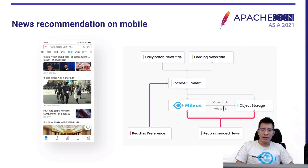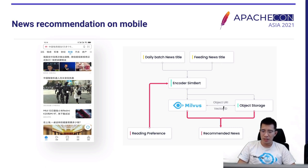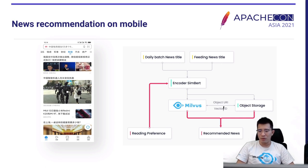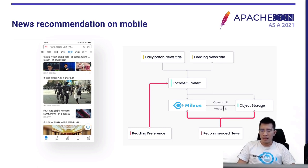Milvus is also widely used in recommendation systems. Xiaomi uses Milvus for mobile news recommendations. They use SimBERT as a model to create embeddings based on users' daily page views and click reads, and they use Milvus to pull out the latest matching articles every day.